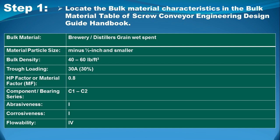The design trough loading for this material based on its density is 30A, or 30 percent. It has a material factor of 0.8, and the component bearing series type is C1 or C2. The material characteristics are: abrasiveness type 1, corrosiveness type 1, and flowability type 1. All these characteristics will be considered throughout the screw conveyor design process.